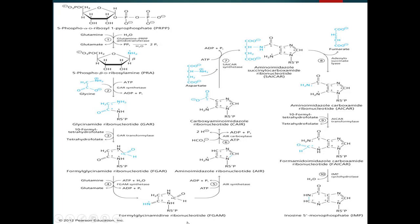FGAM is then converted into aminoimidazole ribonucleotide, shortly called AIR, with the input of energy in the form of ATP, which is converted into ADP and inorganic phosphate, in the presence of the enzyme AIR synthetase.